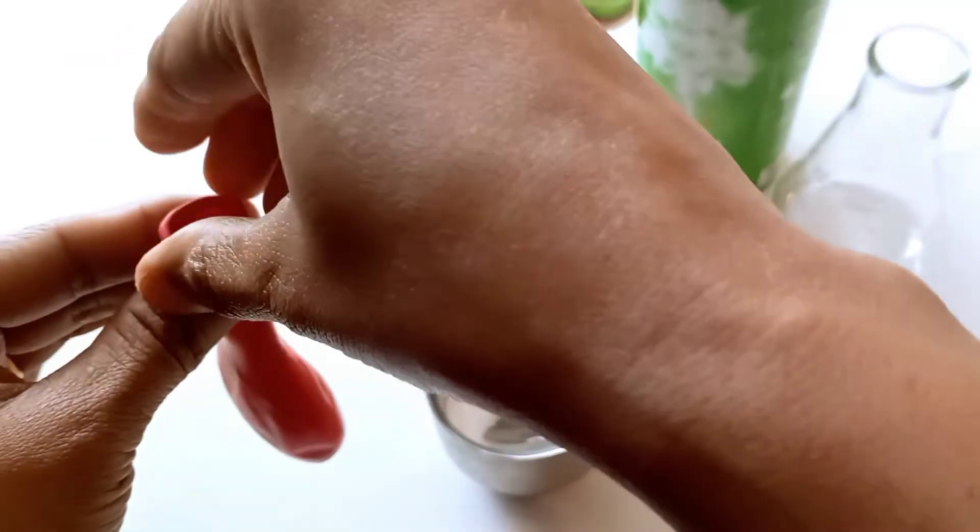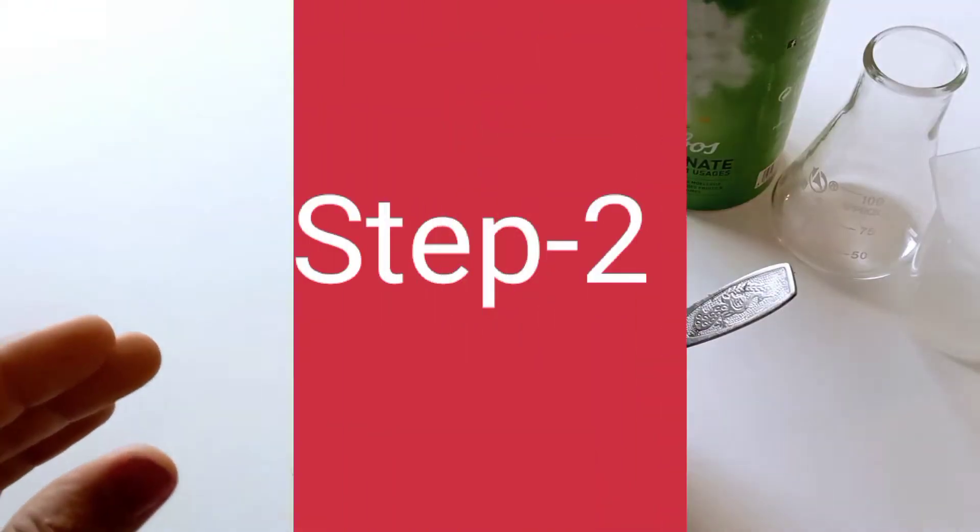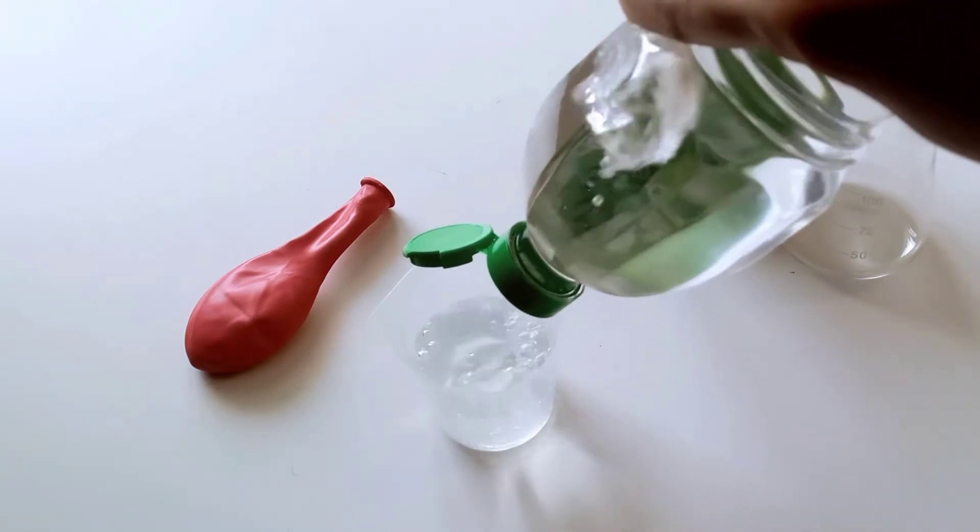Now take out the funnel from the balloon and keep the balloon aside. Step two: Measure 100 ml of vinegar into a large beaker and pour it into a 100 ml conical flask.